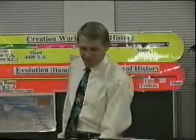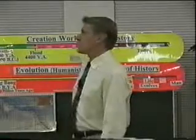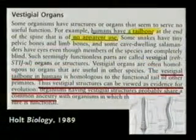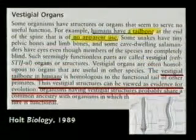If you have some evidence for evolution, I would like to see it. I want to see it so badly, I'll give a quarter million dollars for it. There isn't any. All the stuff they show the kids in these books has been proven wrong. This one says humans have a tailbone that is of no apparent use.